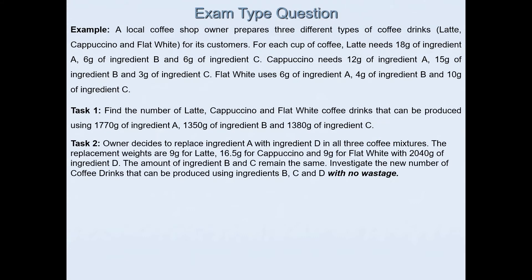The second task says owner decides to replace ingredient A with ingredient D in all three coffee mixtures. The replacement weights are 9 grams for latte, 16 and a half grams for cappuccino, and 9 grams for flat white with 2040 grams of ingredient D. The amount of ingredients B and C remain the same. It says investigate the new number of coffee drinks that can be produced using ingredients B, C, and D with no wastage.